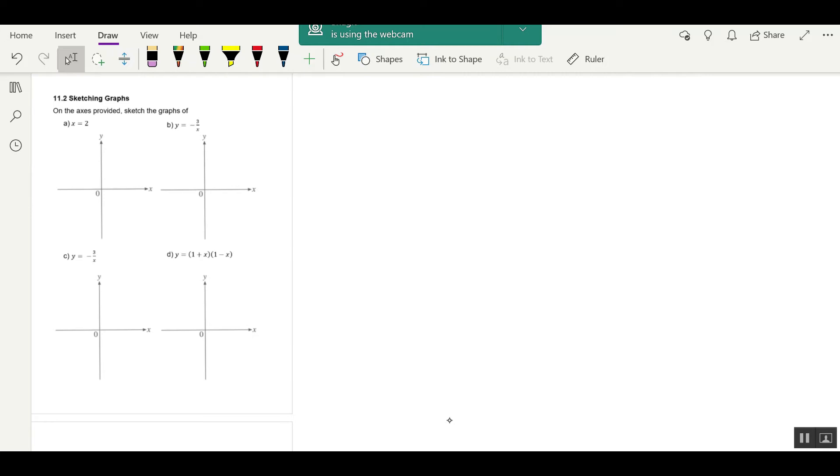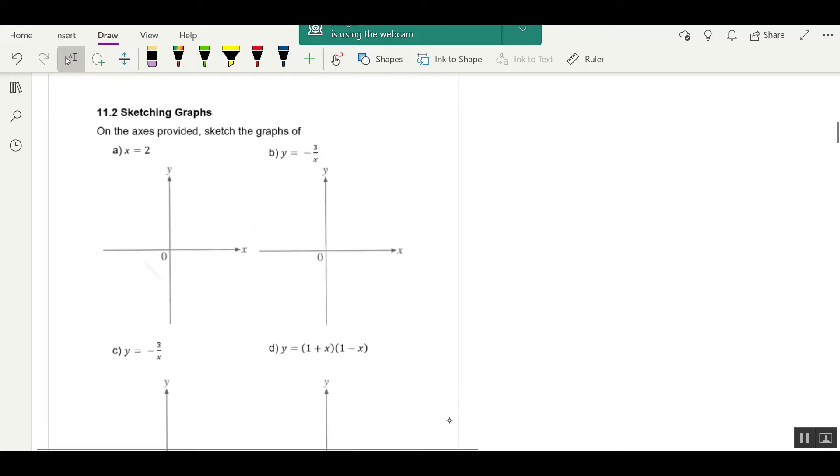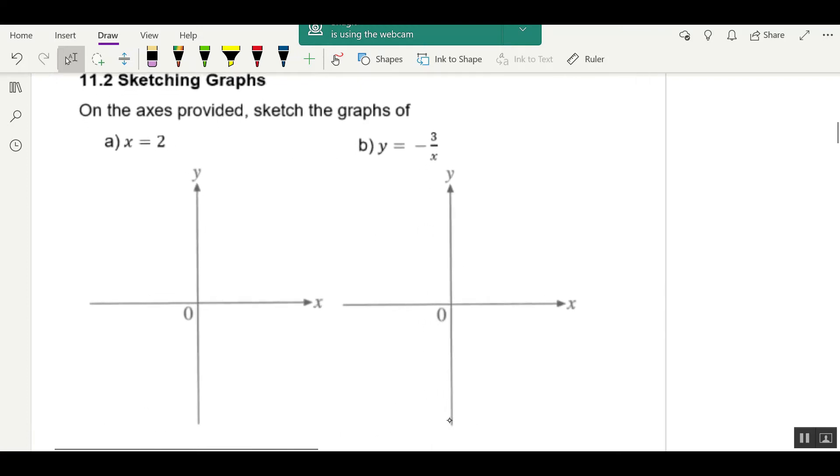Before we sketch this, do this sketching exercise, make sure you are familiar with the graphs in 11.0. Go through the videos in 11.0, make sure you know how the mother graphs look like first. Now, in this question, for A, when you need to draw x equals to 2, x equals to 2 is a straight line.